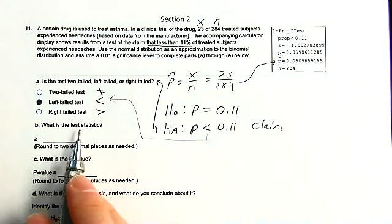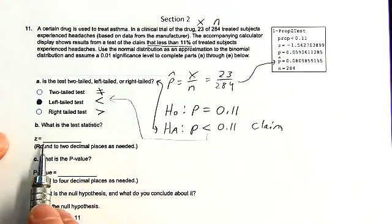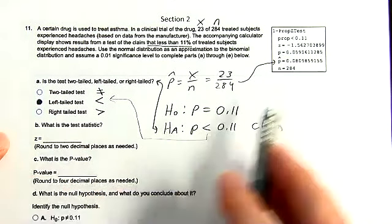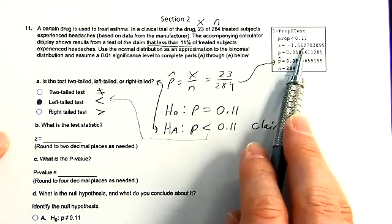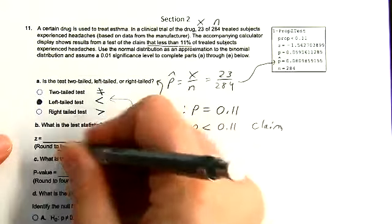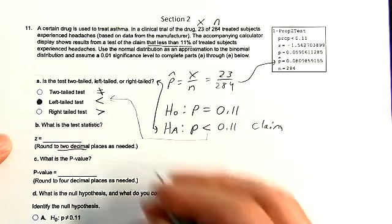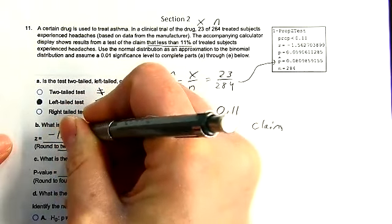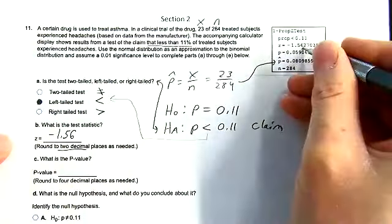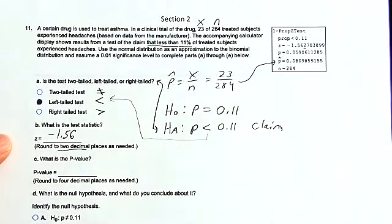What is the test statistic? They're looking for the Z statistic, and we can get it right from the printout. Z equals negative 1.56 — to two decimals, negative 1.56.